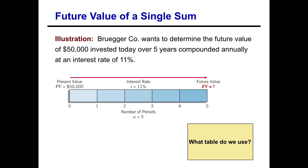First off, which table do we use? To determine that, we ask: is it a future value or a present value question? It says we're going to invest $50,000 today, so we know the present value is $50,000 and we want to know what it's going to be worth at the end of five years. So that's a future value question.